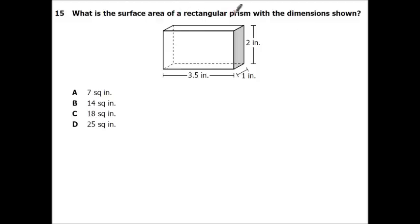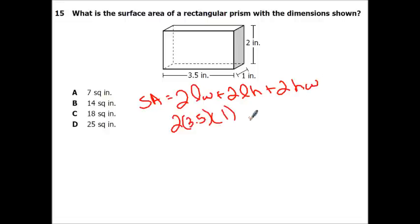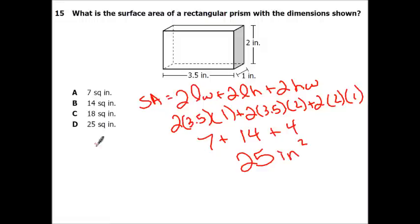Alright, what is the surface area of a rectangular prism with the dimensions shown? So remember this is 2 length times width plus 2 length times height plus 2 height times width. So I'm going to choose 3.5 as my length, 1 as my width. So that means 3.5 as my length again. So my height I'm going with 2. And then I said height was 2, width was 1. So go ahead and multiply this all out. 2 times 3.5 times 1 is 7. 2 times 3.5 times 2 is 14. And then 2 times 2 times 1 is 4. So go ahead and add these all up. So that's going to be 7 plus 14 is 21. 21 plus 4 is 25 inches squared.